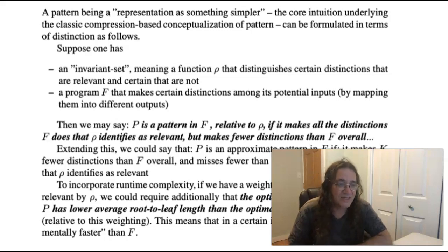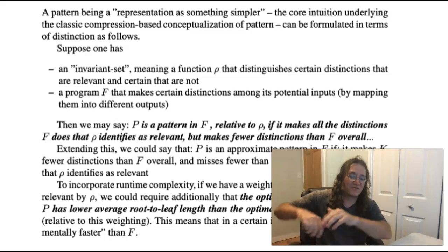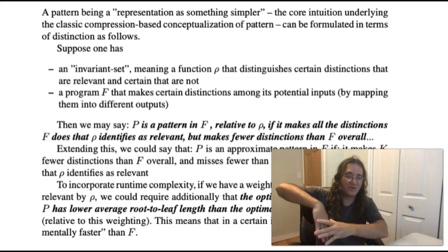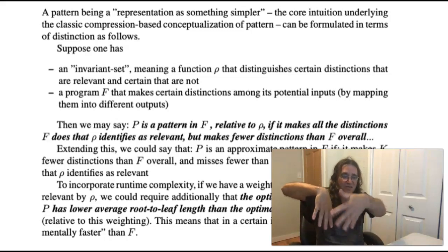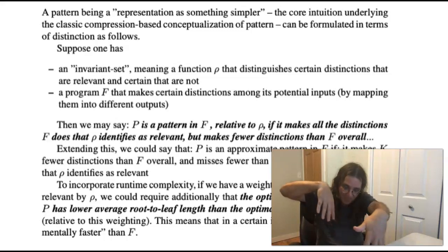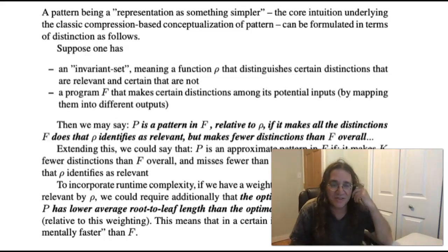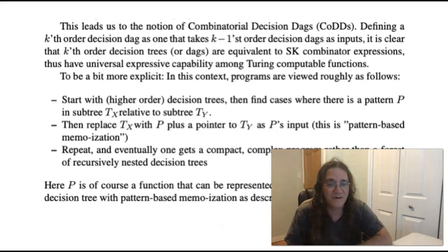As I said, if you want to take into account something like runtime complexity you could say well we need the optimal binary decision tree for the pattern p has to have lower average root to leaf length than the optimal binary decision tree for f. That's a pattern and that means the Shannon entropy of that partition of the pattern is appropriately related to the Shannon entropy for the function, the program that it's a pattern in. There's a lot of other things you can do to quantify patterns, but what I'm more interested in here is using the notion of pattern to extend the representation of programs as decision trees into something that's more AGI-ish and more robustly general purpose.